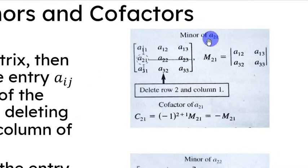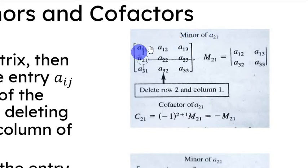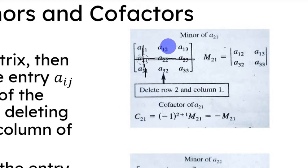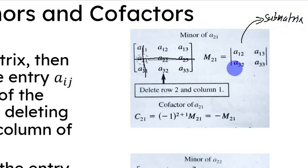If we want to find the minor of entry A sub 2 1, which is the entry in the second row and the first column, that minor is the determinant of the matrix formed by deleting the second row and the first column. We form the matrix with the entries A sub 1 2, A sub 1 3, A sub 3 2, and A sub 3 3 of the original matrix — sometimes called the sub-matrix. The minor of A sub 2 1 is the determinant of that sub-matrix.